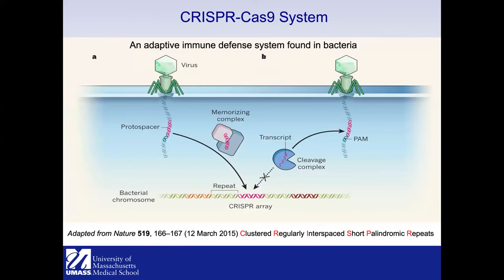The CRISPR-Cas9 system is a recent development — about seven years old now — adopted for genome editing. It has many different applications and borrows a strategy from the way bacteria fight viral infection. When a virus infects bacteria, part of its DNA sequence called a protospacer gets incorporated into the CRISPR array, which stores past invasions as a DNA sequence.